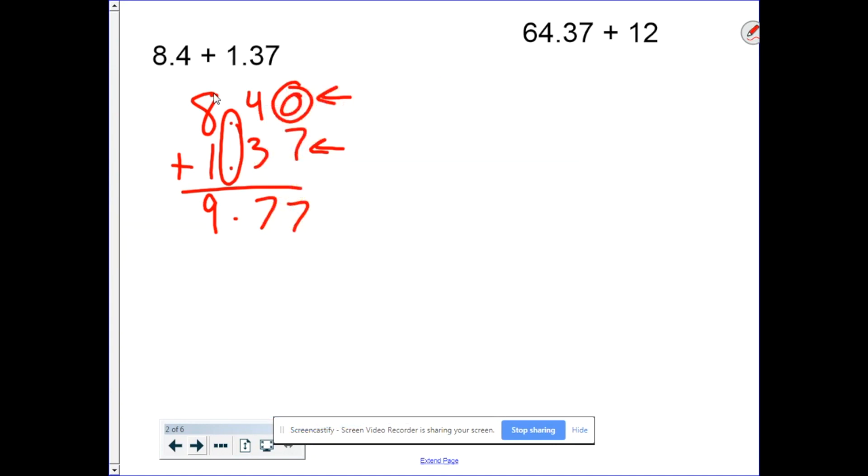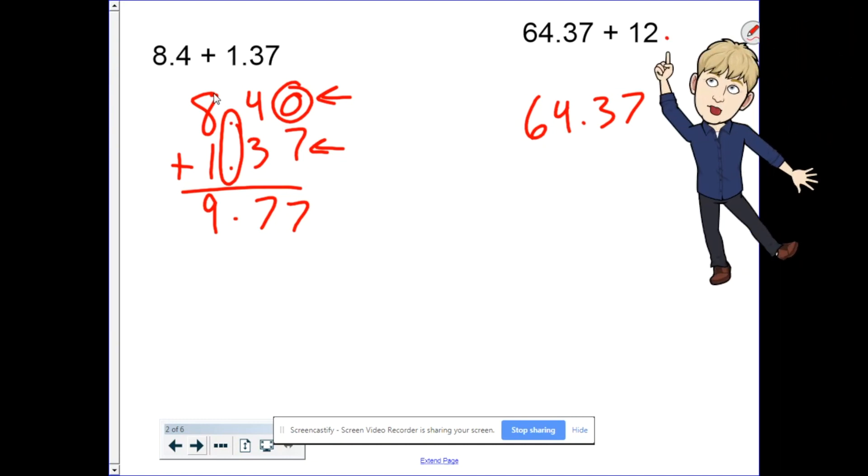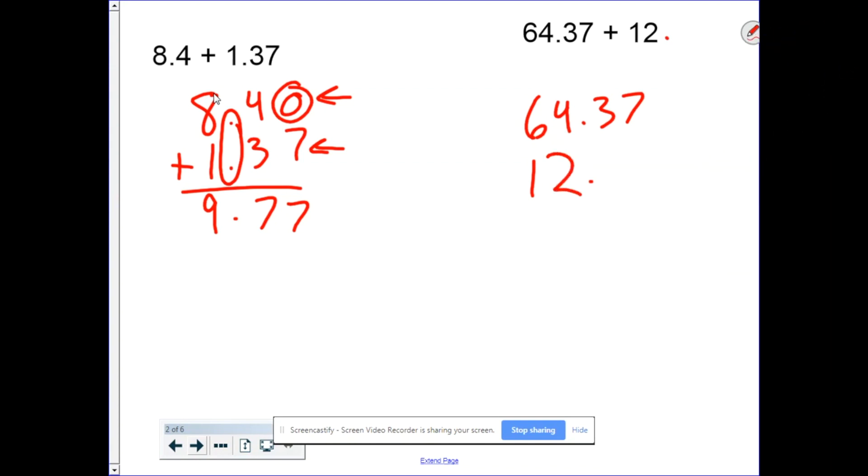Let's do another example. 64.37 plus 12. Some of you have forgotten that if it's a whole number, there still is a decimal point. It happens to come right after the ones place. So I write 12 and there's my decimal point. I've lined up my decimal points. Now I need to fill in the gap. So I put a zero there.